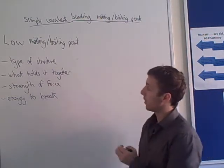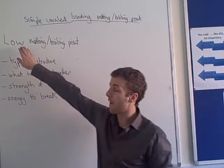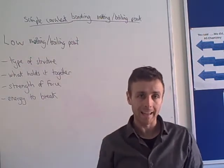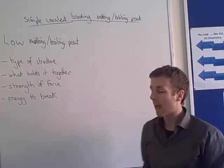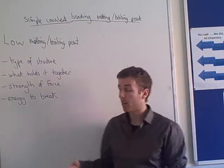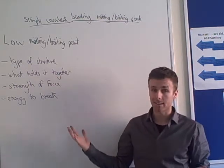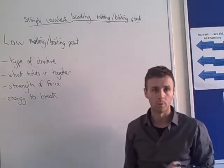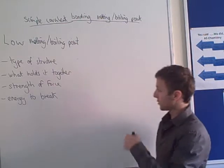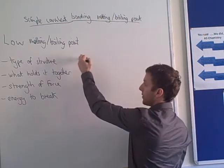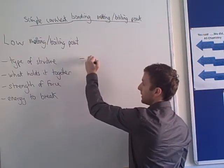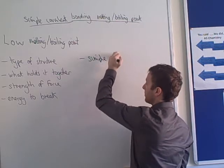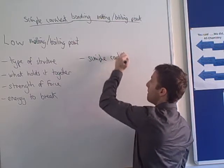So, first of all, these have got a very, very, very low boiling and melting point — it is the lowest. And how we're going to explain that is using the exact same structure as we would for anything else, just these four bullet points. So, what type of structure do they form? They form simple covalent molecules.